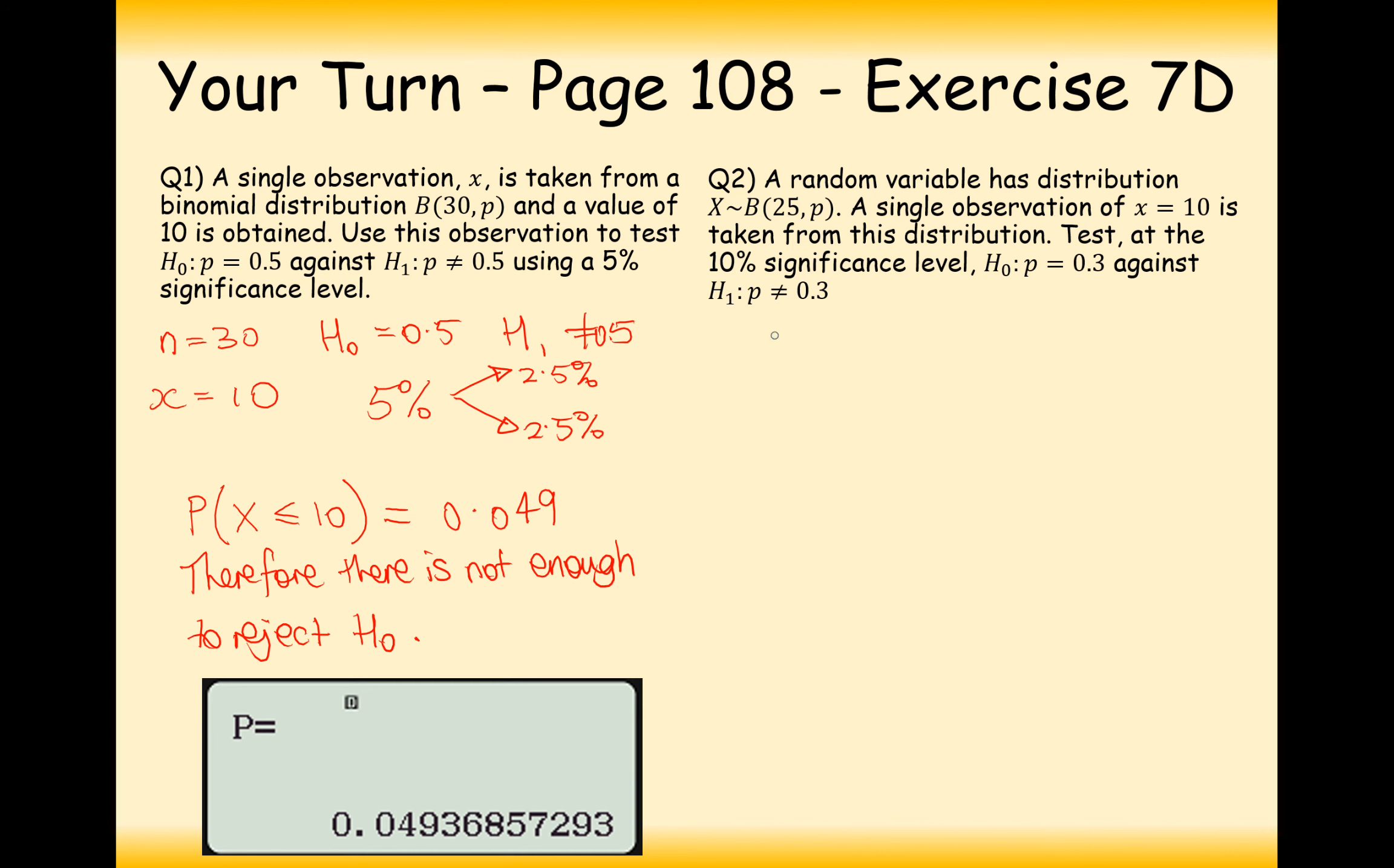In question 2 here, a random variable has 25 trials, and we have 10 successes, very similar to the one before. A test is taken at 10% significance. They've also split that up into 2.5% at either tail. And the null hypothesis is for a probability of 0.3, and the alternative hypothesis is not 0.3. Now, out of 25 trials, if we had 0.3 as the probability, I'd expect 8, maybe 7 of these successes to come out. So, therefore, 10 is a little bit of an overestimate on the number of successes there.